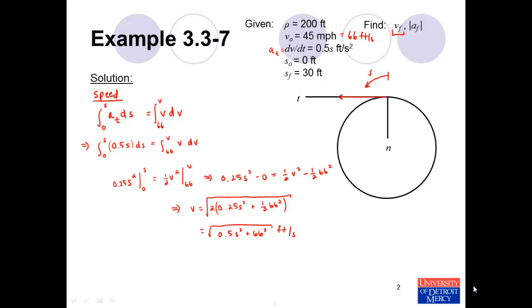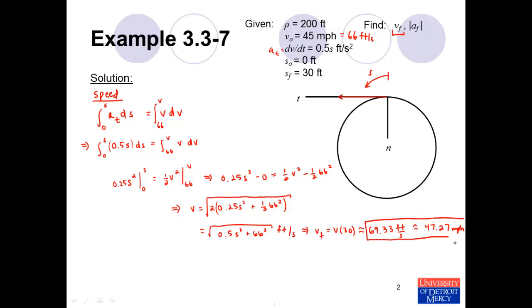What's ultimately asked for is the final velocity when s equals 30 feet. We evaluate our expression at s equals 30: plugging that into the expression and computing, we get that the final velocity is approximately 69.33 feet per second. We could also convert that to miles per hour, which works out to be approximately 47.27 miles per hour. So that's the answer to the first part of the question.